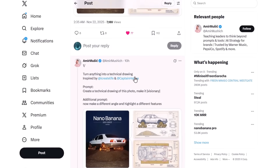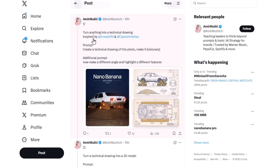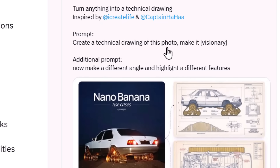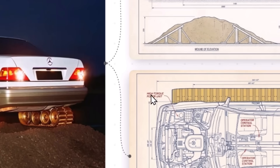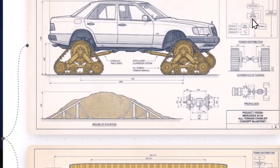Another really cool thing with Nano Banana is creating infographics. You can turn anything into a technical drawing. If you have an image and give the prompt 'create a technical drawing of this photo, make it visionary,' Nano Banana Pro will create a detailed technical drawing explaining every part of the car. The larger text in the image is correct, but if you look at the smaller text, those are pretty distorted — so bigger texts are accurate, but smaller texts have some distortion.